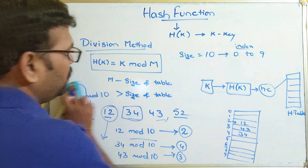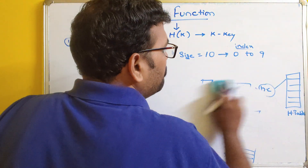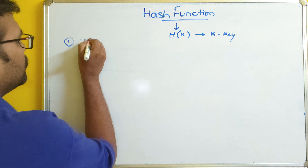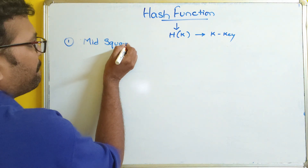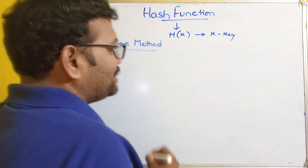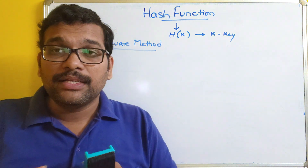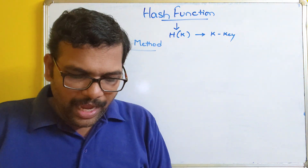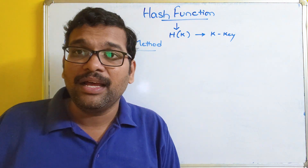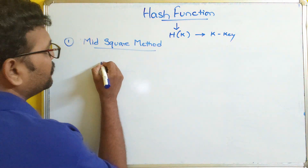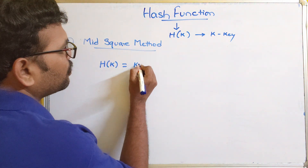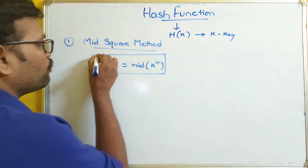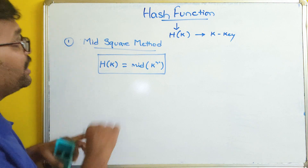The second method is the mid-square method. In this method, we first compute the square of the key, then remove the leading and trailing digits one by one, and consider the middle part as the hash code. So H of K = middle element of K².